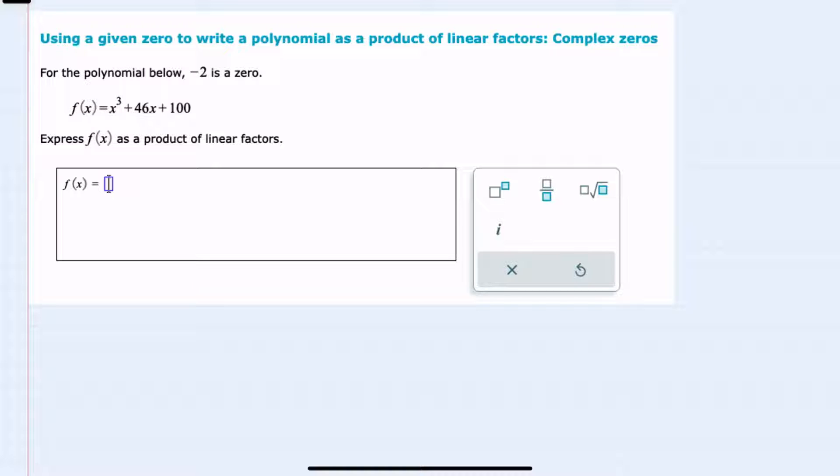We're given a polynomial here, f of x, and we're told one of the zeros is negative 2, and we're asked to write f of x as the product of linear factors.